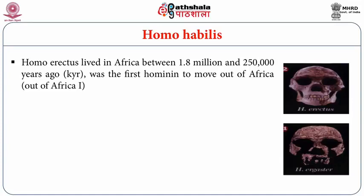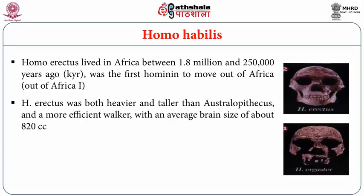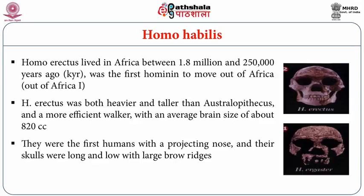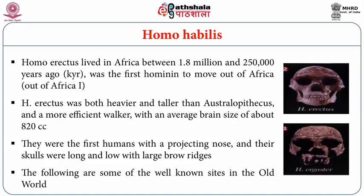The succeeding Homo erectus lived in Africa between 1.8 million years and 250,000 years ago and was the first hominin to move out of Africa. Homo erectus was both heavier and taller than Australopithecus, a more efficient walker with an average brain size of about 820 cc. They were the first humans with a projecting nose, and their skulls were long and low with large brow ridges. Some well-known sites across the Old World and cranial remains from different parts of Africa illustrate Homo erectus fossils.